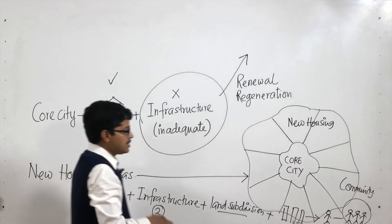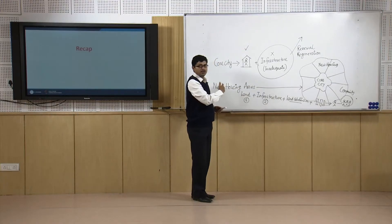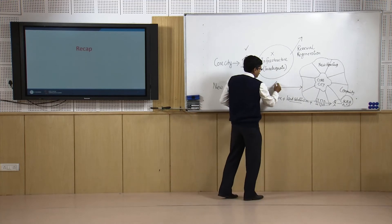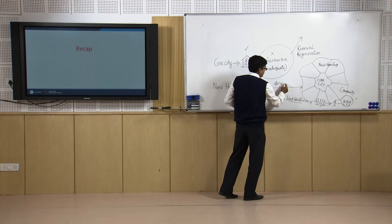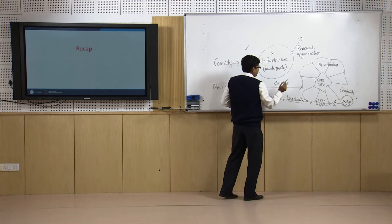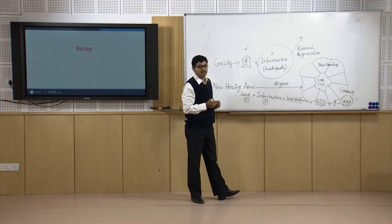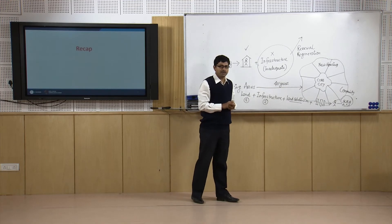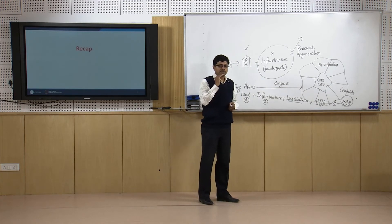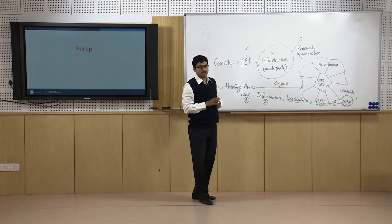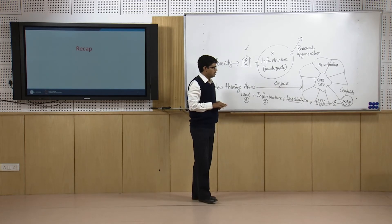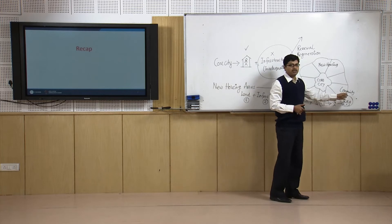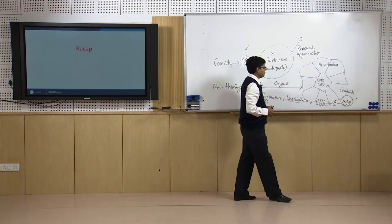The community development in new housing areas is a long-term process and can take about 20 to 40 years maximum. Maybe you get houses after 4 or 5 years following land development, infrastructure development, and land subdivision — you may get lots of buildings — but the people and the community development take a lot of time. These two approaches are completely different.